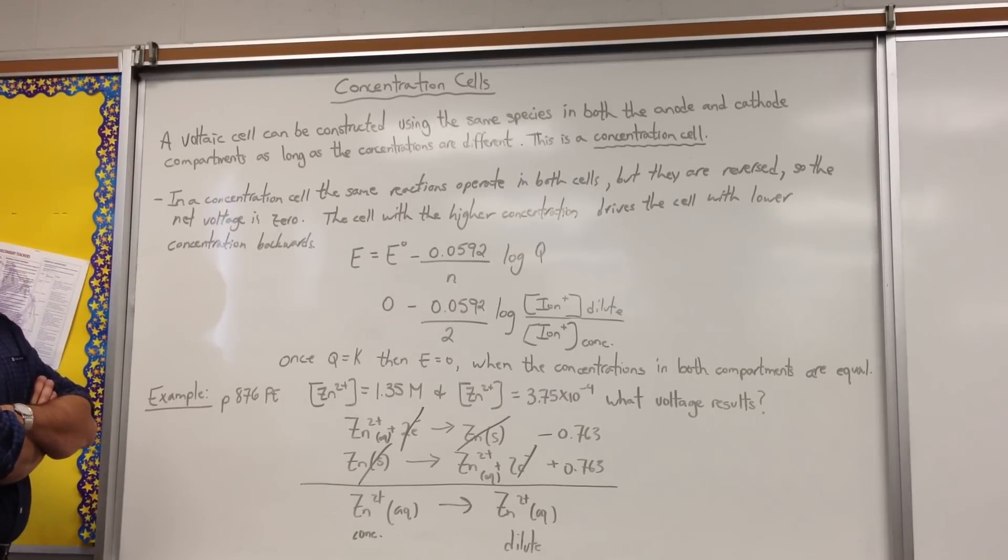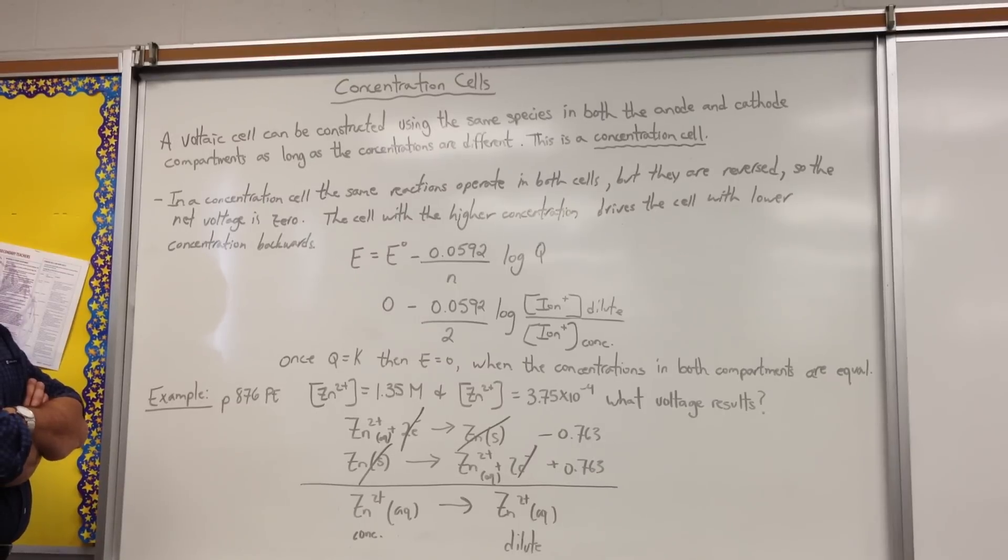In a concentration cell, the same reactions operate in both cells, but they're reversed, so the net voltage is zero. The cell with a higher concentration drives a cell with a lower concentration backwards.